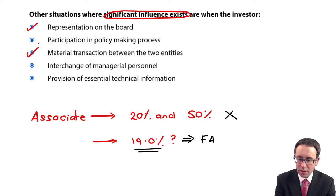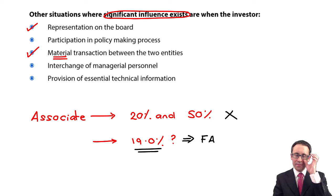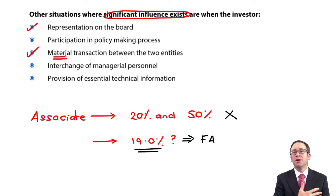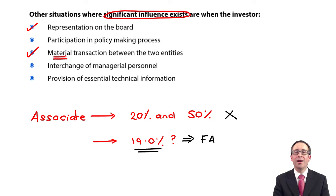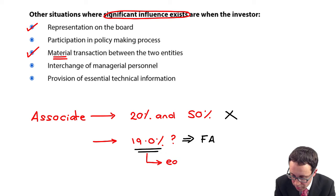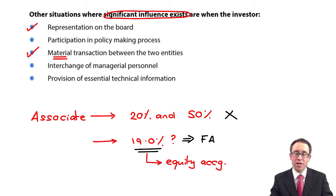Similarly, if there are material transactions between the two entities, that means there's a large volume of transactions happening between the parent and the associate. That is an associated company that we have significant influence over, because we're exerting our influence to ensure those material transactions — those material sales — take place. So in that case, that 19% could actually be equity accounted, provided there is board representation or material transactions taking place.